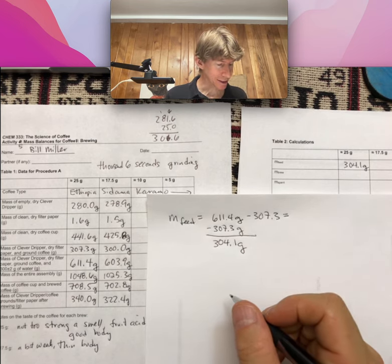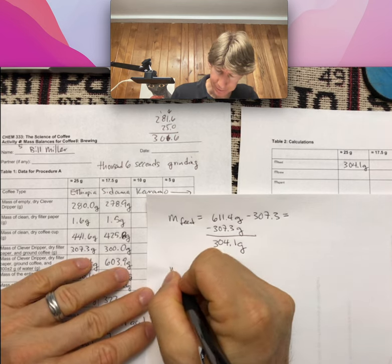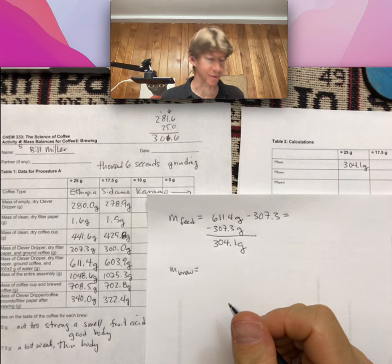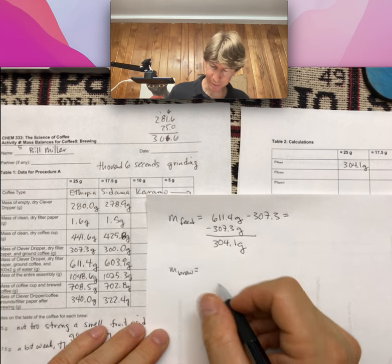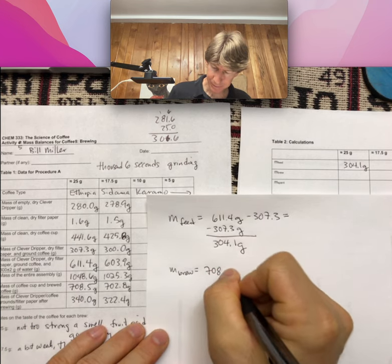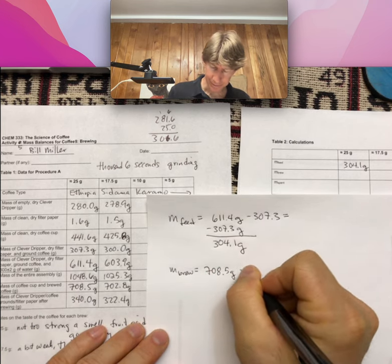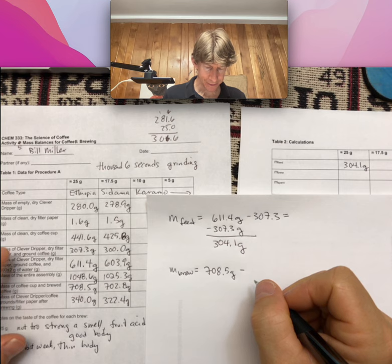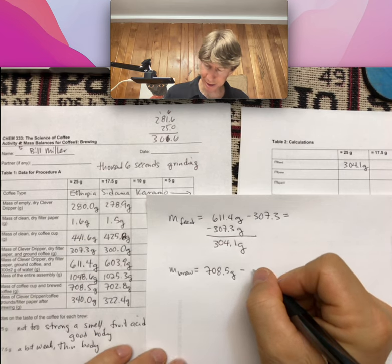M_brew, which is the mass of the brewed coffee, is mass of coffee cup and brewed coffee, 708.5, minus mass of clean dry coffee cup, 441.6.